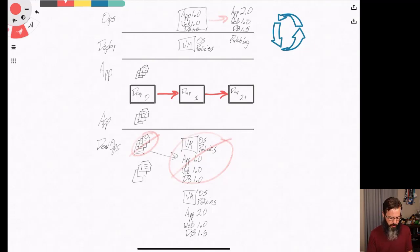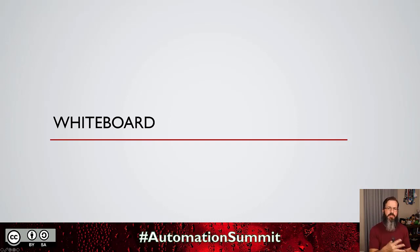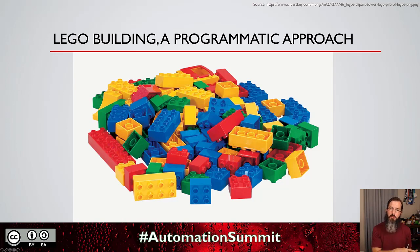Now that we have a good understanding of the difference between mutable or changing infrastructure and immutable or generally unchanging infrastructure, let's talk about it from a different perspective: how do we build these things? We talk about the difference between imperative and declarative. One of my favorite activities is Lego building, so let's apply that concept to our infrastructure.